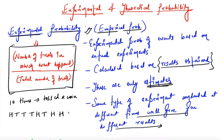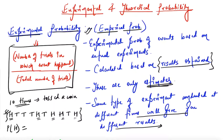Those are ten total results. Based on this experiment, the probability of getting a head — counting the heads: one, two, three, four, five — gives number of heads equal to five. Total number of trials is ten. So the probability is 5/10 = 1/2. This is what experimental probability means.